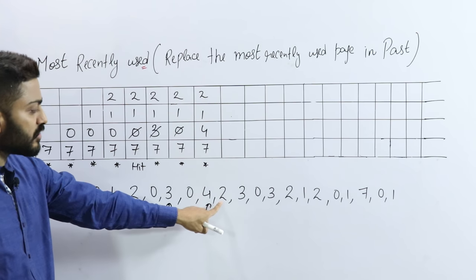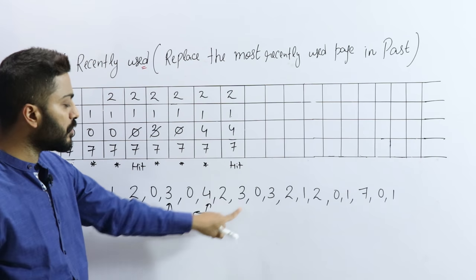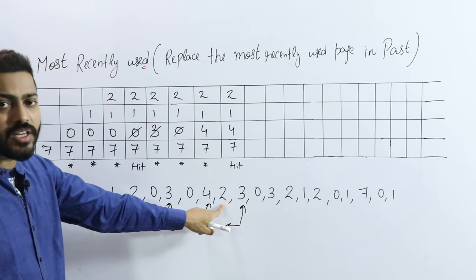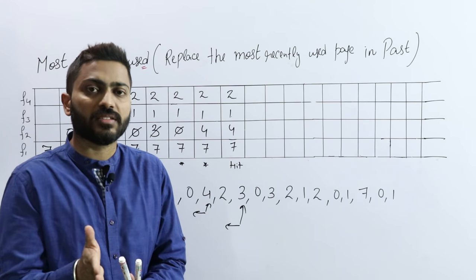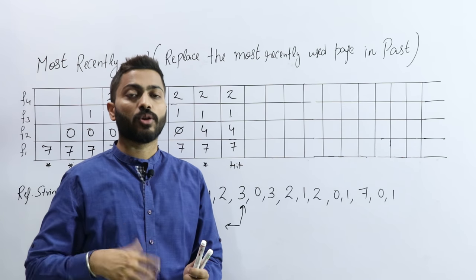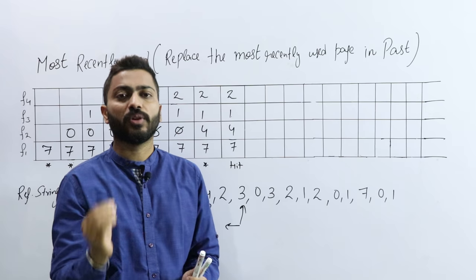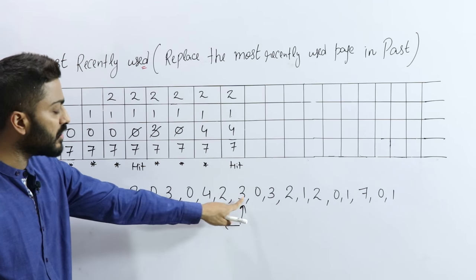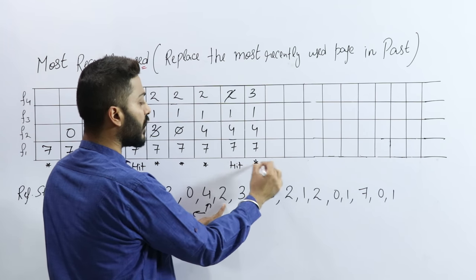Next, page number 2 — is page number 2 present? Yes, it is already present — that is called a page hit. Next, page number 3 — is page number 3 present? No, page 3 is absent. The MRU method's logic is: it replaces the page that the CPU just called — the page containing the byte that the CPU most recently accessed. This means that page's demand may not come again soon, so it replaces that recently used page with the fresh page. So to bring in 3, we replace 2 — that is again a page fault.